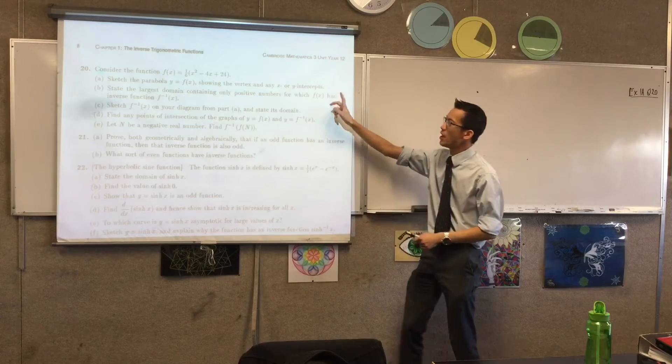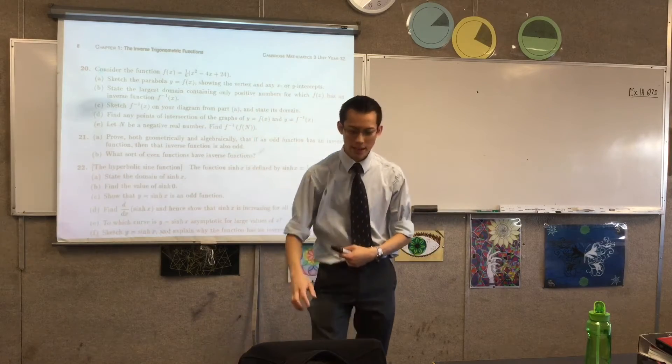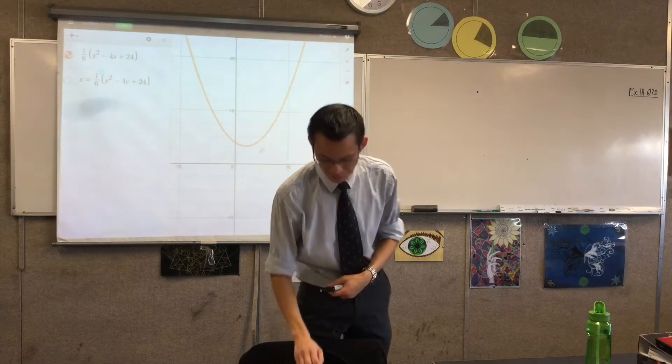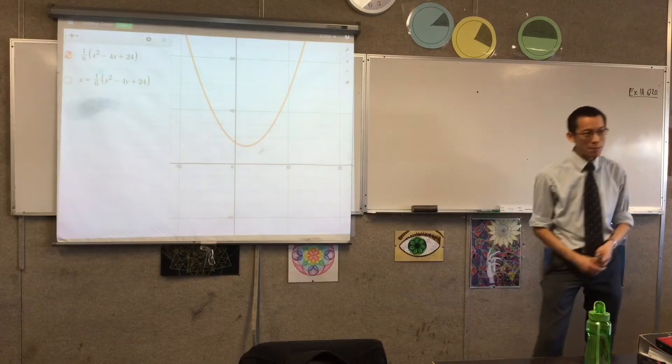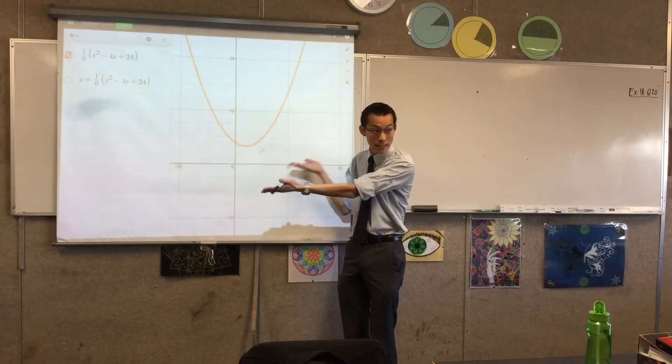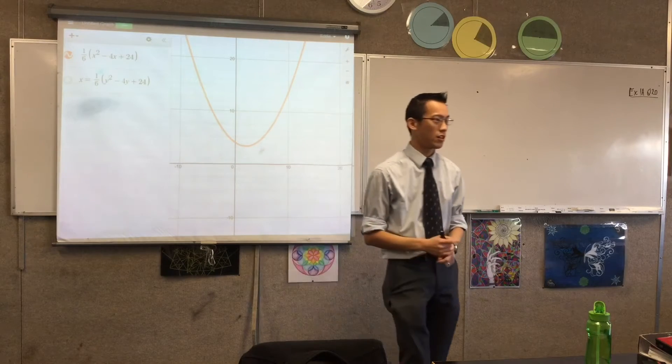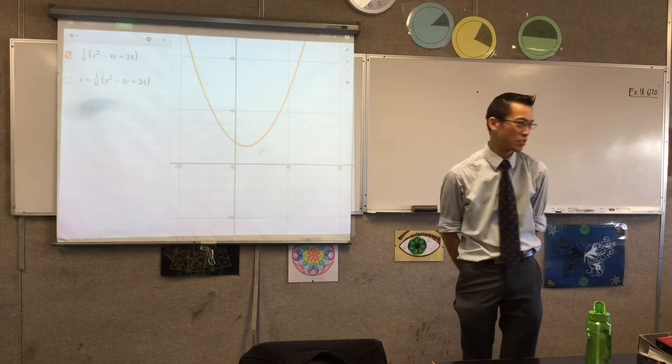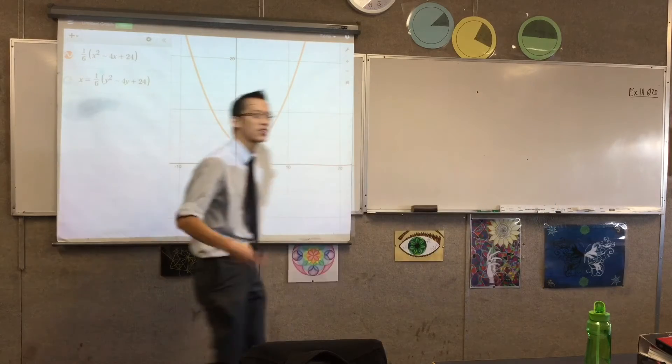So the first part is, can you tell me what it looks like? So just in case you don't have it in your head, here we go. There's the parabola, and the first thing you'll notice about it is it has no x intercepts. And the reason why is because it's positive definite.